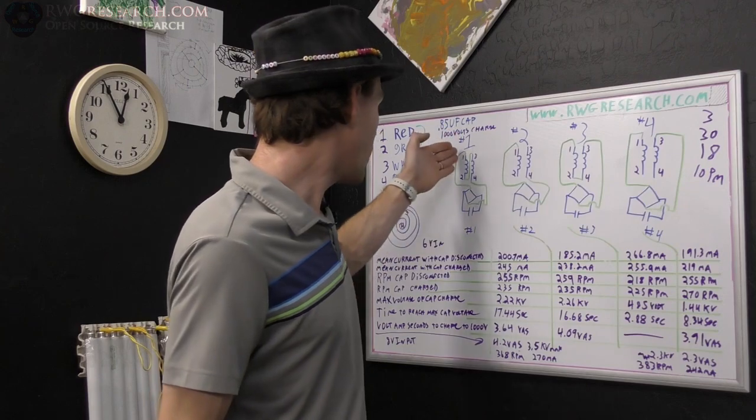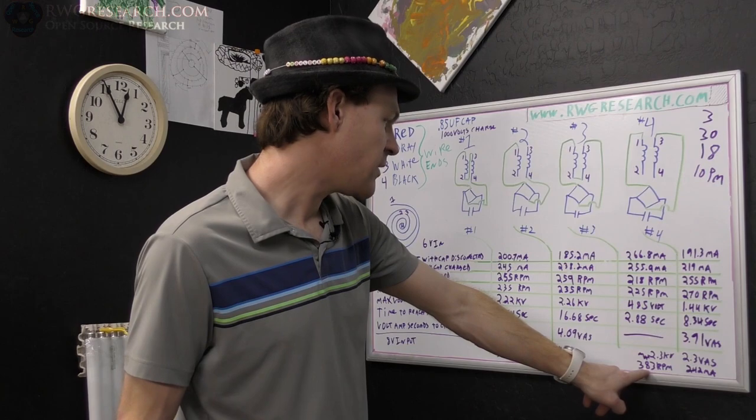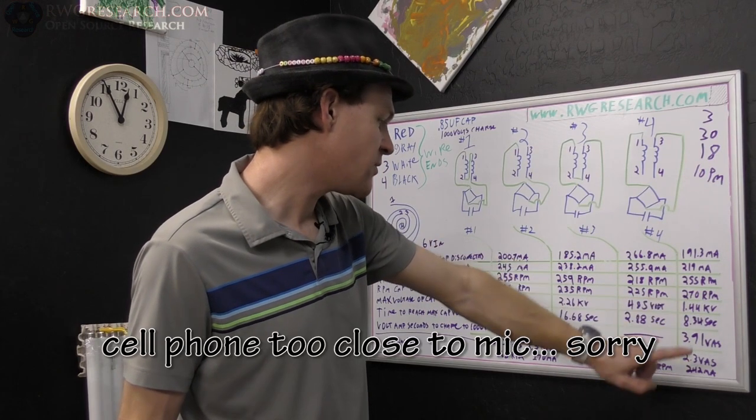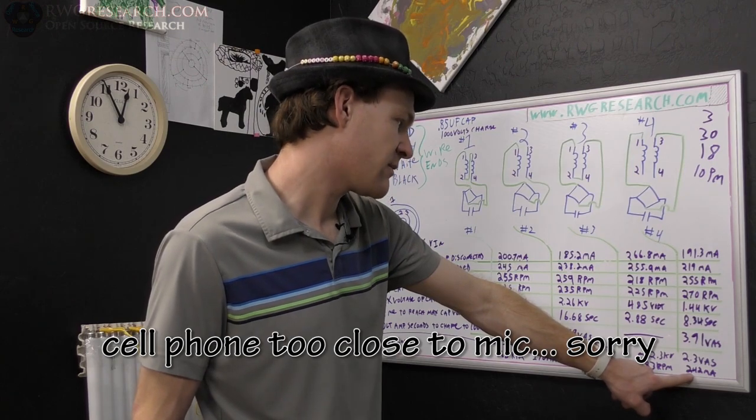270 milliamps with the cap connected. And then here, that's number one. And this was number four. So this data is all number four. 383 RPM versus 270. And then 242 milliamps versus the 219.